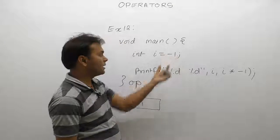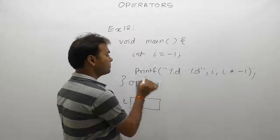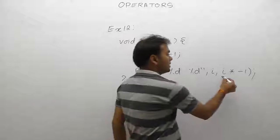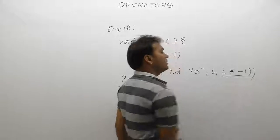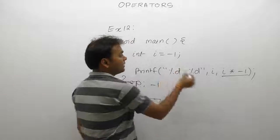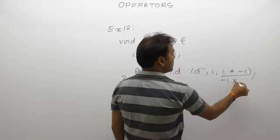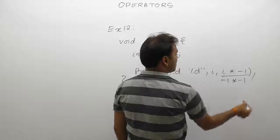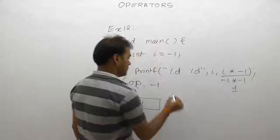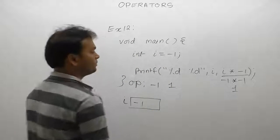In this case, i is minus one, therefore minus one got printed. But in the next case, i multiply by minus one — i's value is minus one, minus one multiplied by minus one gives plus one. Finally, the output is one.